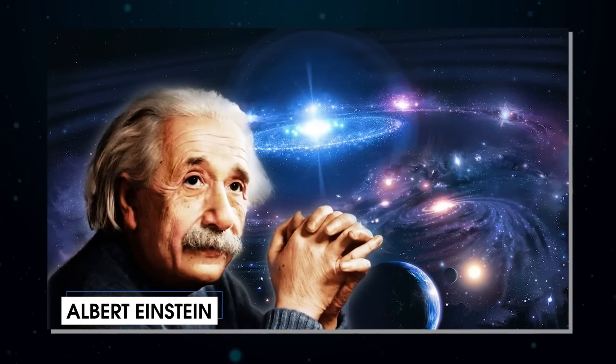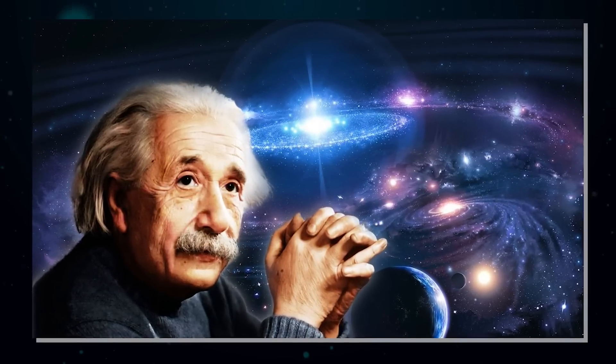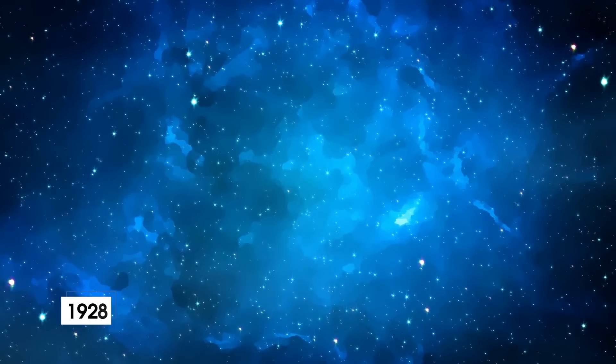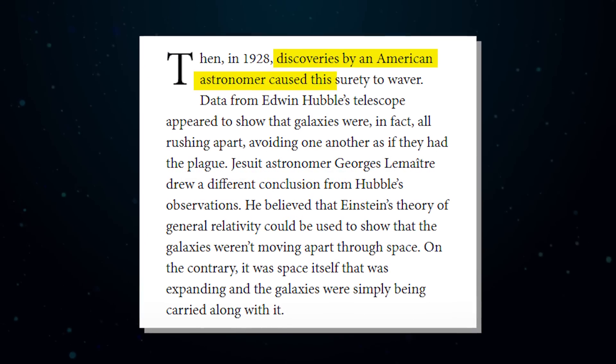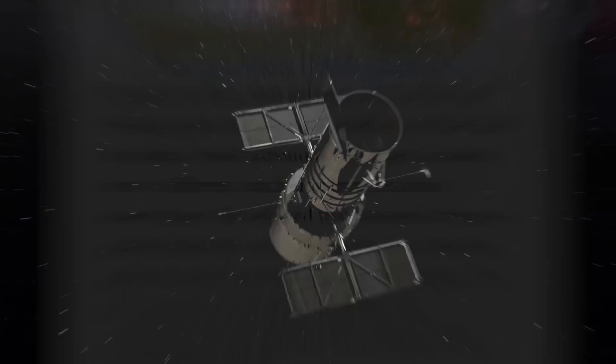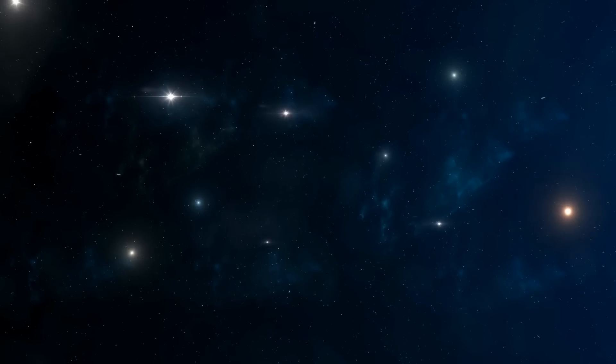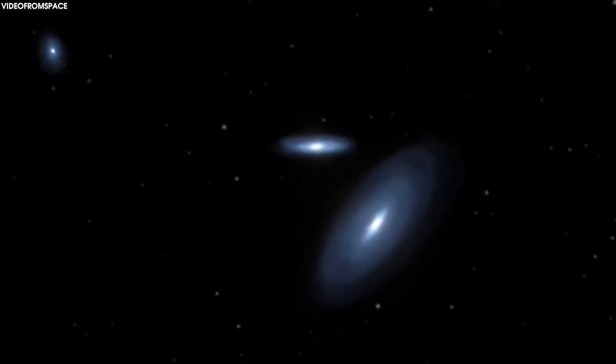Even Albert Einstein assumed that the universe now must look like the universe a trillion years in the past and future. Then, in 1928, discoveries by an American astronomer caused this surety to waver. Data from Edwin Hubble's telescope appeared to show that galaxies were in fact all rushing apart, avoiding one another as if they had the plague.